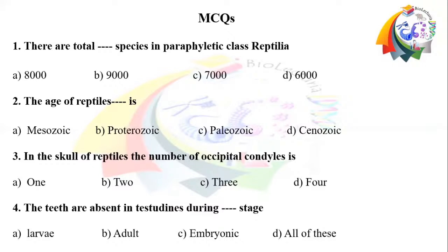Question number 4: The teeth are absent in sinusoids during a dash stage. Option A: larva. Option B: adult. Option C: embryonic. Option D: all of these.